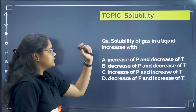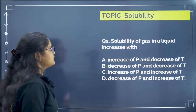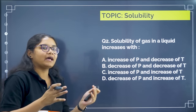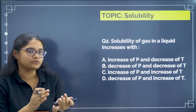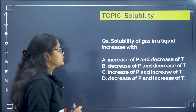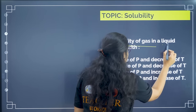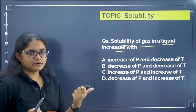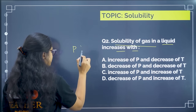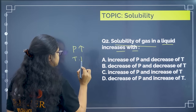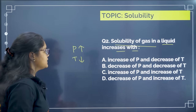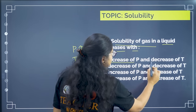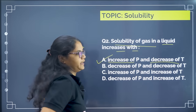Next question is a statement-based question from solubility. Under solubility, we have two types: solubility of gas in liquid and solubility of solid in liquid. For solubility of gas in liquid — when pressure is more and temperature is less, solubility increases. So the correct answer is: increase of P and decrease of T, which is option A.